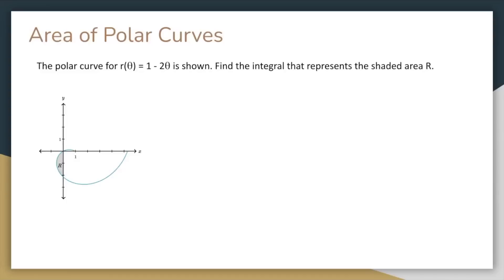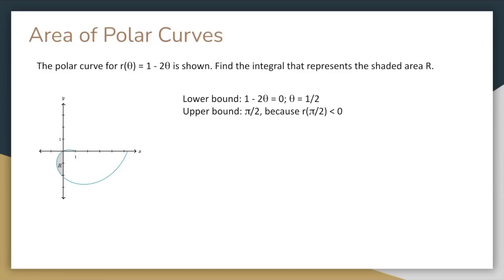Determining the derivative of polar curves is essentially the same as parametric curves, as long as you realize x equals r cosine theta and y equals r sine theta. Now we'll jump right into the area of polar curves. The polar curve for r of theta equals 1 minus 2 theta is shown. Find the integral that represents the shaded area. The key part of these problems is finding the bounds. The shaded area begins at the origin, where r of theta equals 0. So solving for theta, you get that the lower bound is theta equals 1 half. And be careful of the upper bound: it may initially seem the upper bound is theta equals 3 pi over 2, but the upper bound is actually theta equals pi over 2 because r of pi over 2 is negative. And the formula for area is the integral of 0.5 r of theta squared d theta. And now you just plug everything in to get the answer.